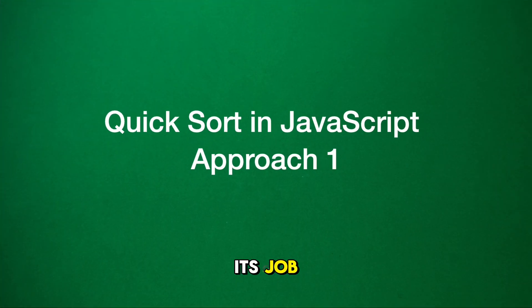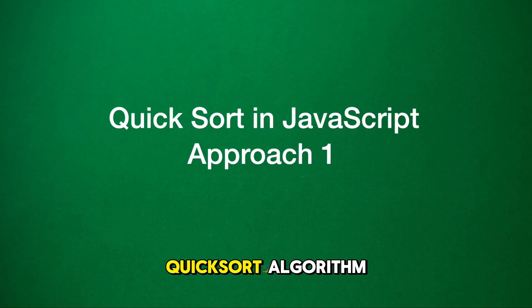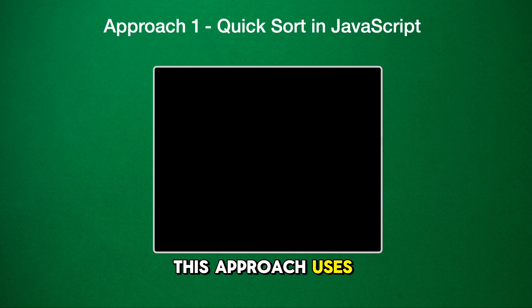We're going to explain a JavaScript implementation of the QuickSort algorithm. This approach uses the first element as the pivot. We start with a function called QuickSort, which takes an array R as its parameter. The function begins with a base case. If the array has one or no elements, it's already sorted, and we simply return the array.